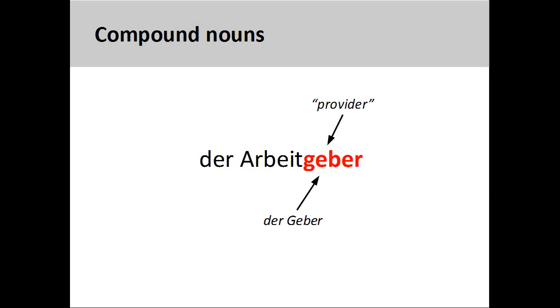You will recall from the presentation on masculine nouns that all nouns ending in -er that are derived from a verb are masculine. Here you will note an important rule governing compound nouns: the final noun in the chain will determine the gender of the compound noun. By putting these two nouns together, meaning work and provider, we can come up with the definition of the noun, which is employer.